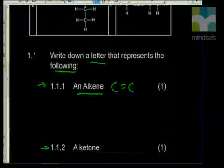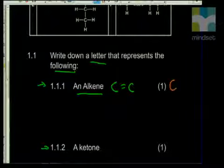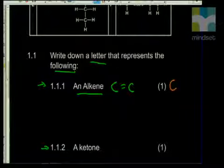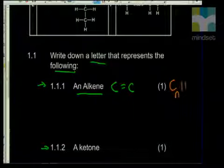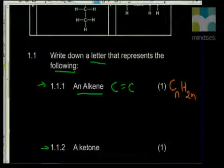A homologous series has a special functional group and a general formula. The general formula for the alkenes is CnH2n — that's the molecular formula showing the ratio of carbon to hydrogen. We'll check that we have it correct when we identify the alkene.